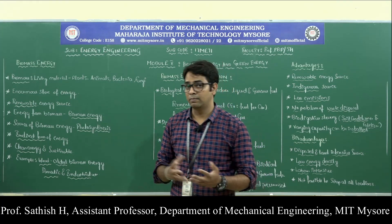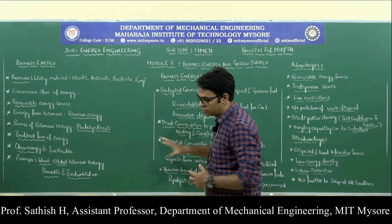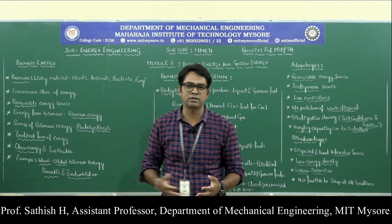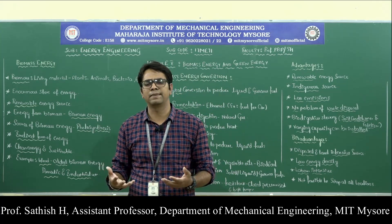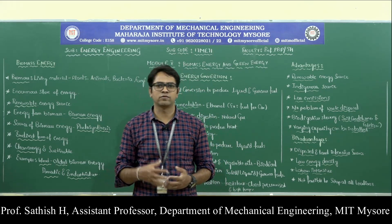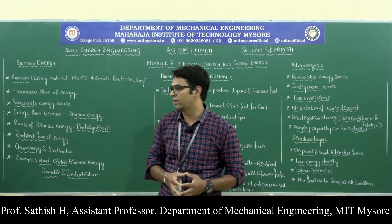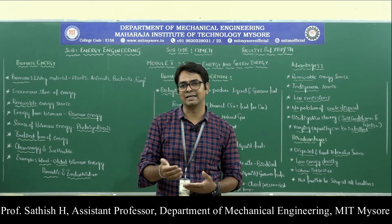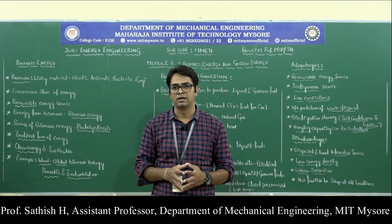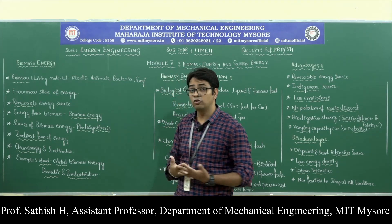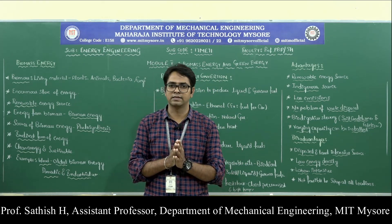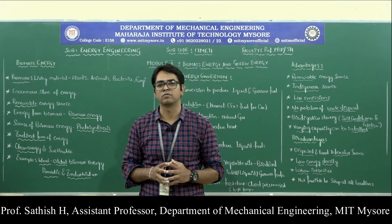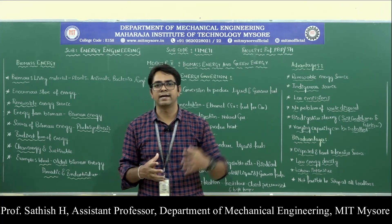This is a brief introduction to module number 5, particularly about biomass energy. To summarize: biomass is the living material — plants, animals, bacteria, fungi — also called organic matter or living organisms. The energy produced from these is called biomass energy. Two important advantages are: it is a renewable source of energy, and it is a clean and green energy that produces minimal pollutants. The photosynthesis process is the source, and the sun is the basic source of all energies on earth — biomass is an indirect form of energy from the sun.